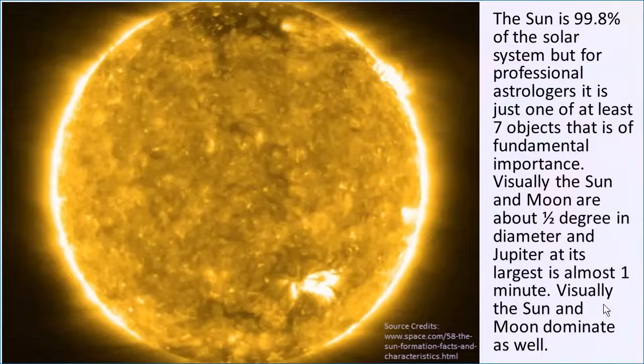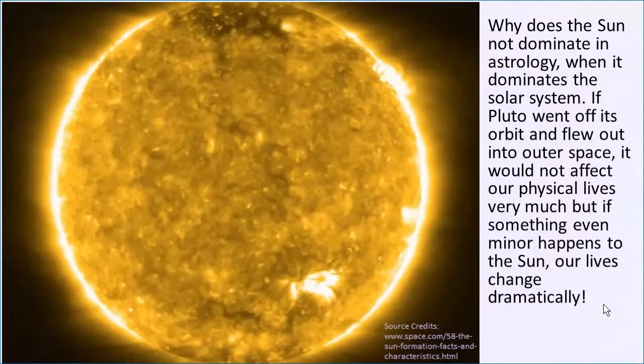Also, visually, the Sun and Moon are dominant. The Sun and Moon are about a half a degree in diameter. Jupiter, at its largest, is almost one minute — there are 30 minutes in a half a degree. The Sun and Moon are bigger physically and they also appear bigger in the sky. Especially the Sun is really huge.